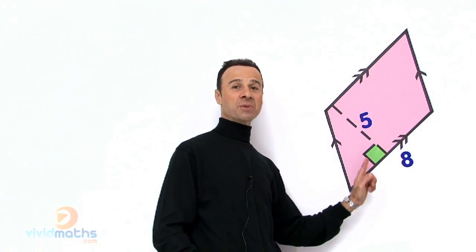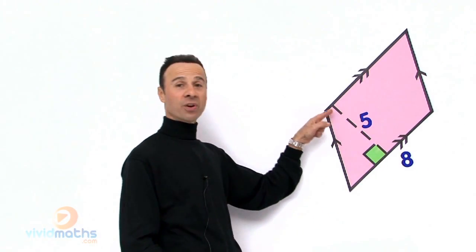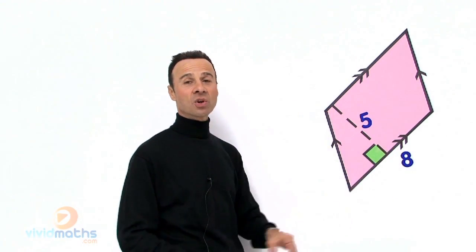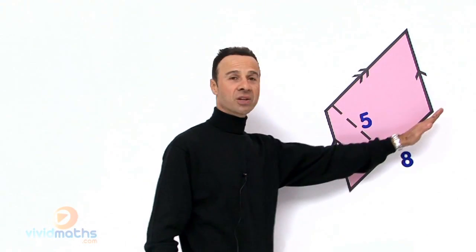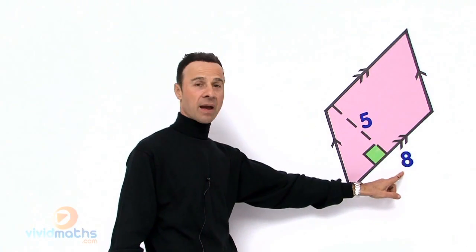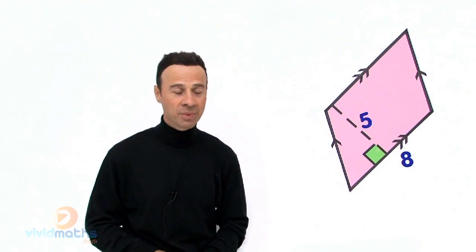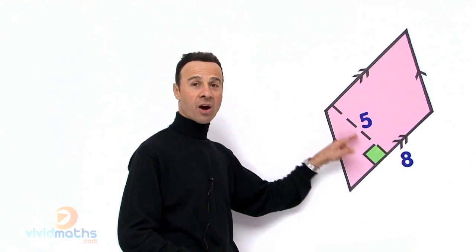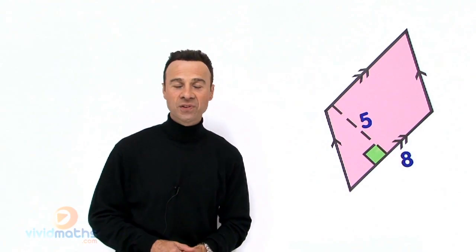must be perpendicular, must be at 90 degrees, must be vertical from the base. So what we have here is a base going at this angle here and it's a distance of 8cm and the perpendicular height here is 5cm.